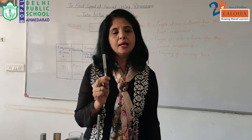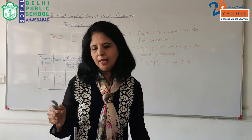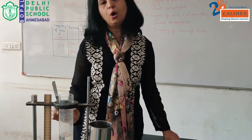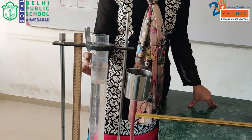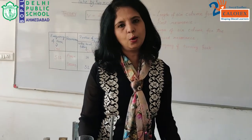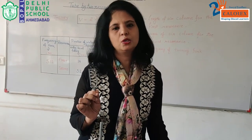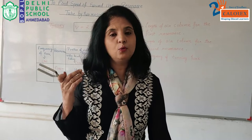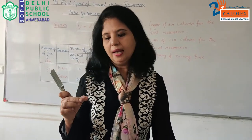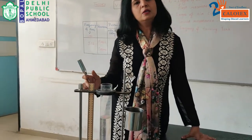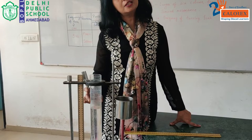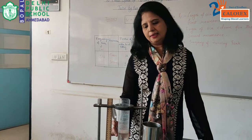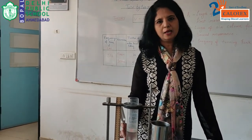Whenever we strike this tuning fork on the rubber pad and hold it above the surface of this glass tube, the air column inside the glass tube starts vibrating. Whenever the frequency of vibration of the air column matches with the frequency of vibration of the tuning fork, maximum amplitude of the sound wave occurs and we hear the maximum sound. Resonance can happen more than once — at a certain length we achieve the first resonance position, and then by changing the water level we get the second resonance length.